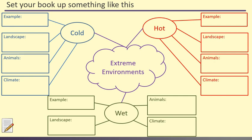You don't necessarily need to write each of the boxes — example, landscape, animals, climate — you don't need the boxes. We might do those in turn as we come to them. You just need to have something that looks a little bit like this. Pause the video and start creating this across a double page in your book now.